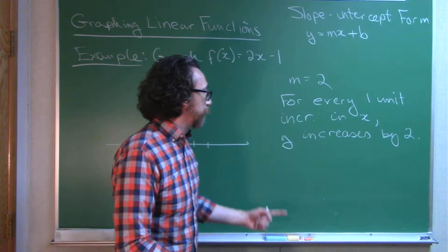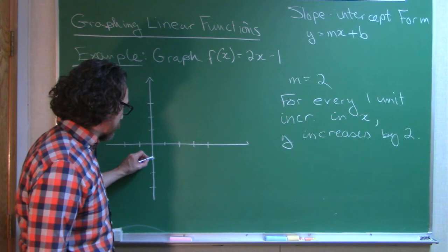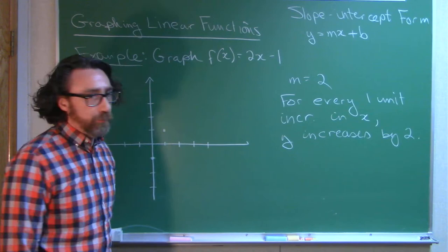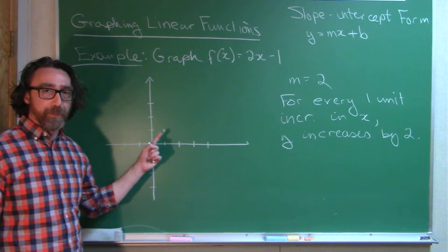So because the slope is positive, I know y is going to increase when x increases. So here's where we start. 1 unit increase in x, we're supposed to go up 2 and increase y by 2 units. That is another point on my graph.